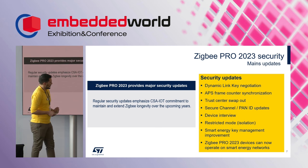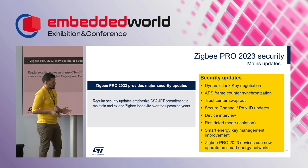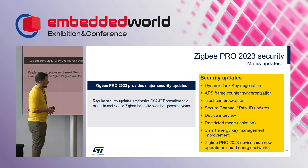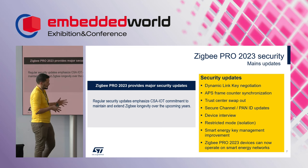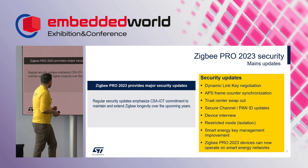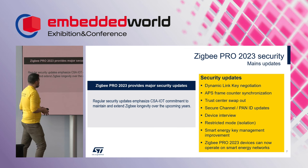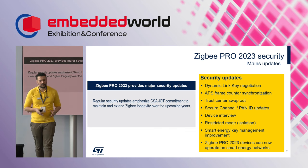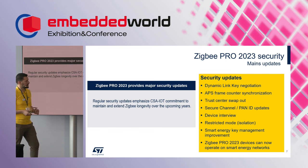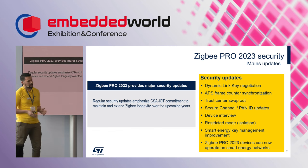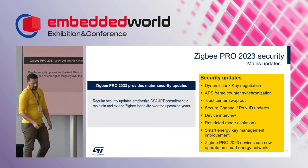There is also restricted mode or isolation — like a firewall — which provides network segregation, preventing certain devices from accessing data on other devices. Smart Energy key management improvements are also included. Overall, this demonstrates that the CSA is committed to improving, enhancing, and maintaining Zigbee over time for upcoming years.